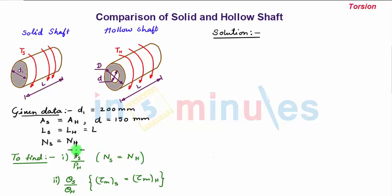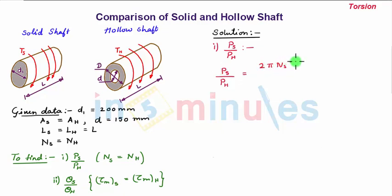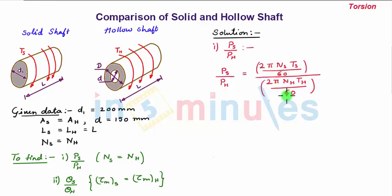We move to find the first part, which is the ratio PS by PH. The power formula is given as 2πNT/60. So PS will be 2πNS·TS/60, and PH will be 2πNH·TH/60. The 2π and 60 terms cancel from numerator and denominator. Since NS equals NH as given, those also cancel, giving us PS/PH = TS/TH.